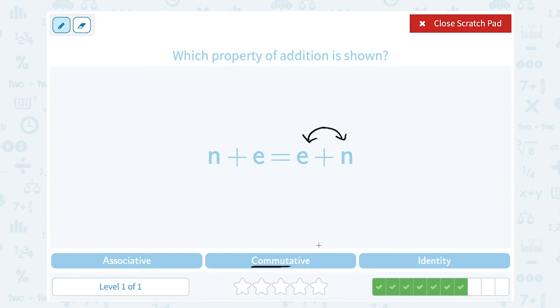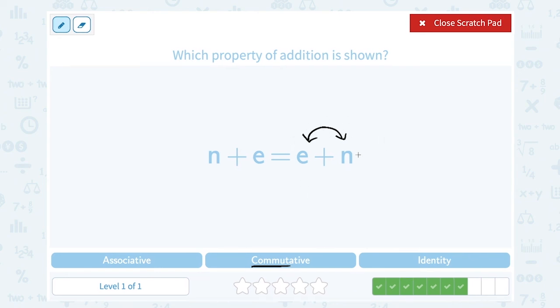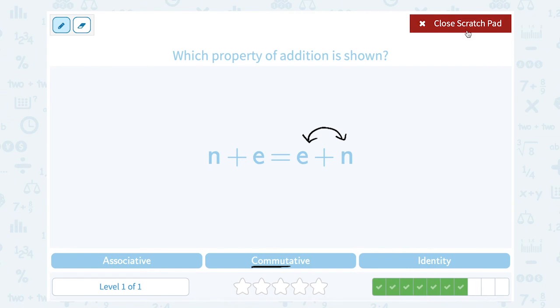If I commute to work, I'm driving from home to work. If you commute to school, you might be taking the bus or maybe riding your bicycle to get from home to school. So when you commute, you're moving from one place to the other. And that's a way that we can remember they're moving the order of the numbers for commutative property.